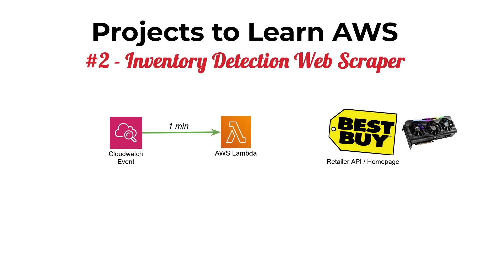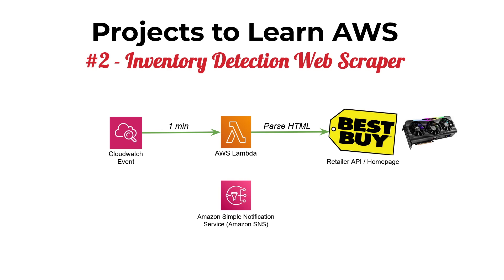When our CloudWatch Event triggers our Lambda function, it's going to launch a headless browser and parse the HTML from the Best Buy website for the particular URL where our item is located. By examining certain elements in the HTML we can figure out if there's any stock currently available. If there is, we trigger Amazon Simple Notification Service (SNS) programmatically from our Lambda function, wiring our SNS topic to our cell phone so that anytime the application detects inventory in stock, it sends us a text message.